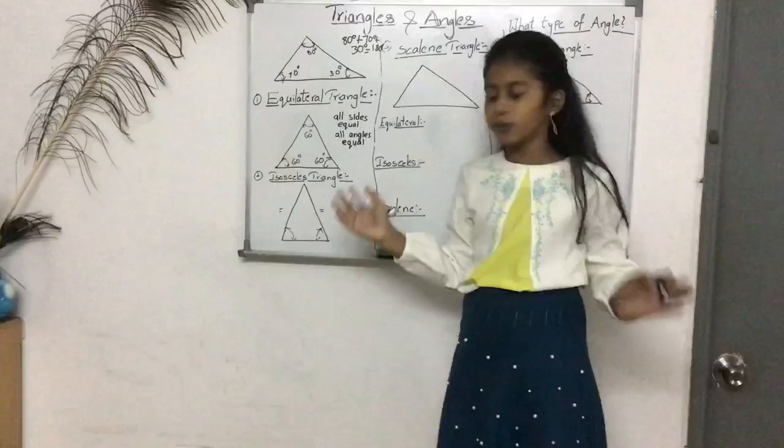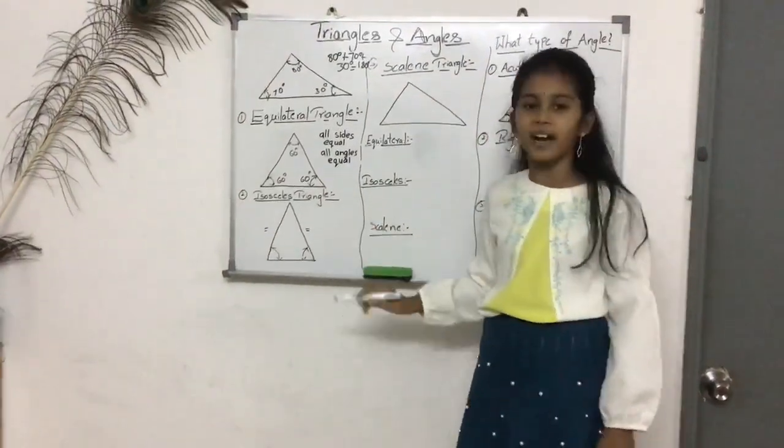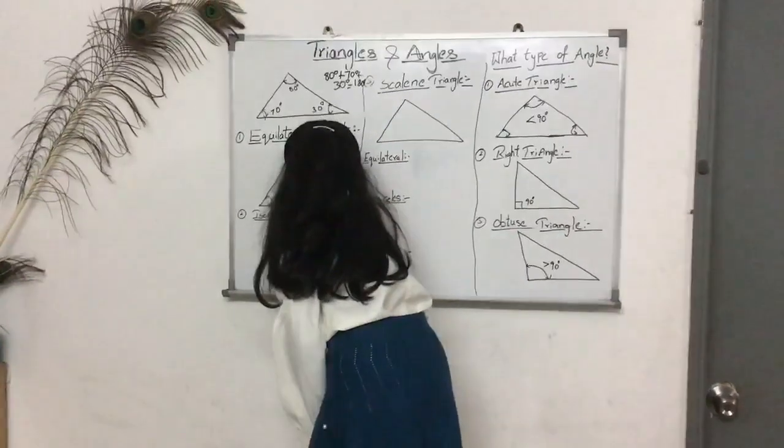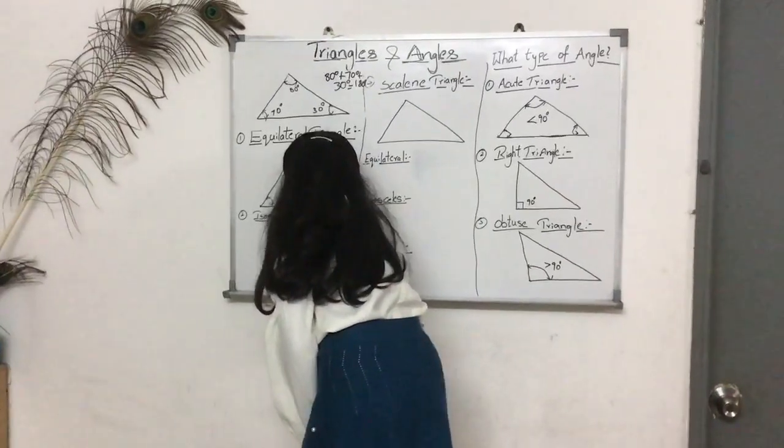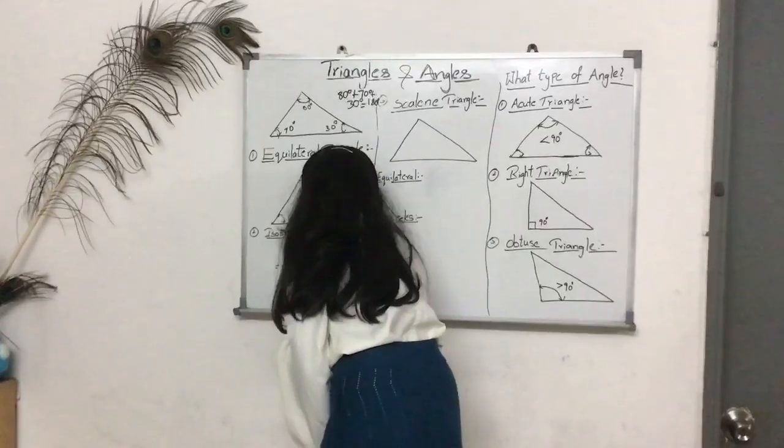Always 60 degrees, any angle. Now, this is an isosceles triangle. It's two sides equal and two angles equal.